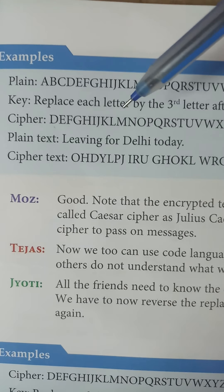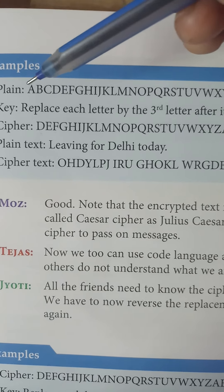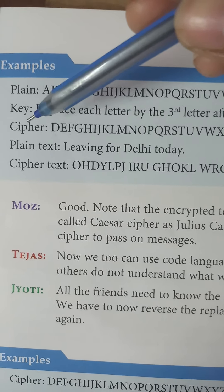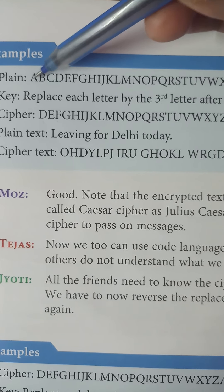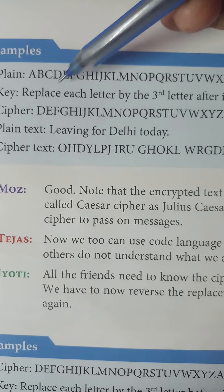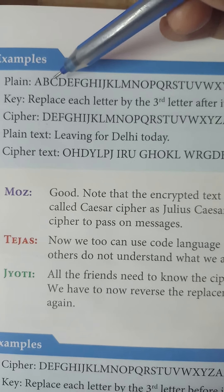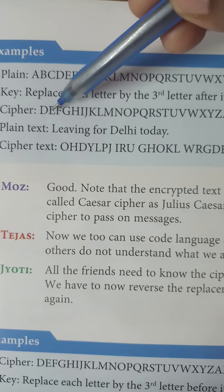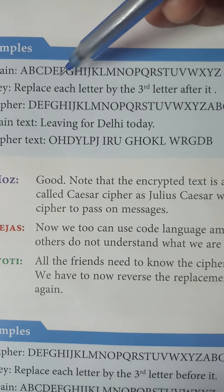When we register with a website, we have to give some personal information like email address, phone number, and we also have to enter a password. So when we are using a website, we need to give our personal information like our name, date of birth, email address or maybe phone number, and also a password. So how is this information kept secret? Is our personal information protected or not?